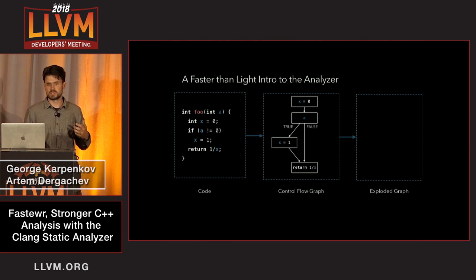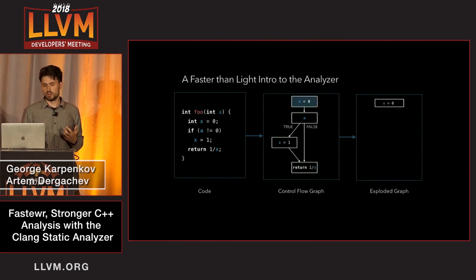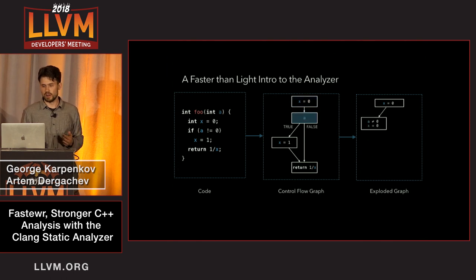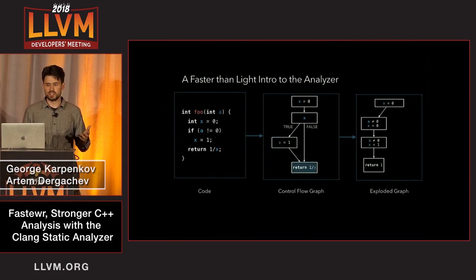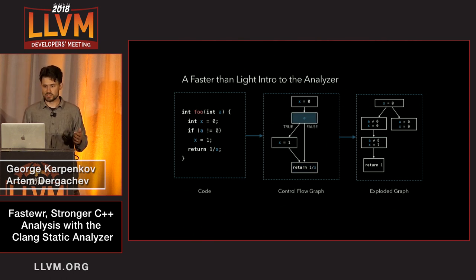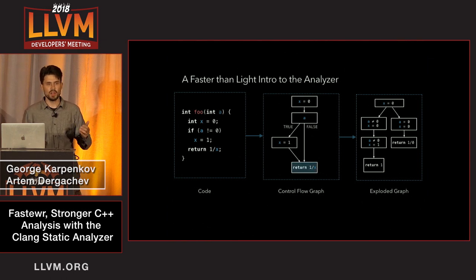In this example, the analyzer starts with setting X to zero, then branching on A follows. First we explore the branch where A is non-zero, so X is set to one, and we return one — everything is good. Then the second branch is explored. In that branch, A is zero, so X remains zero. We have to return one over zero, which is a bug, and therefore the report is generated.